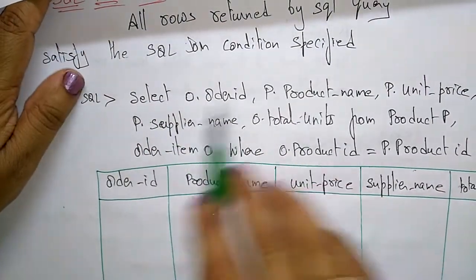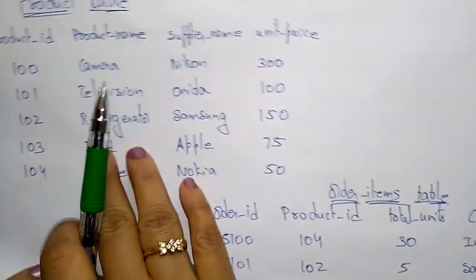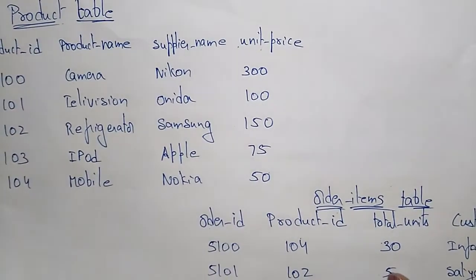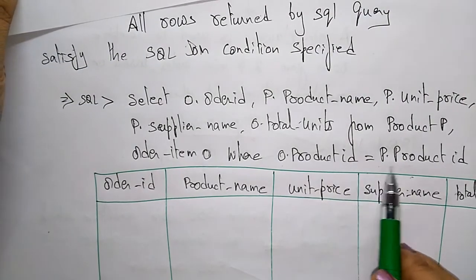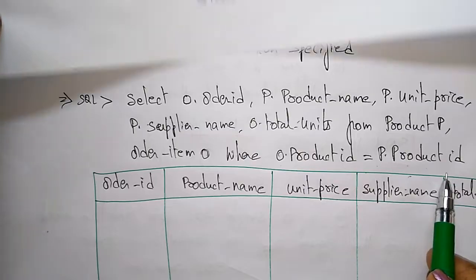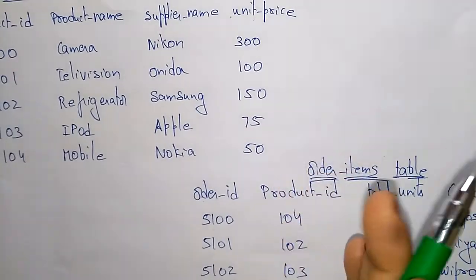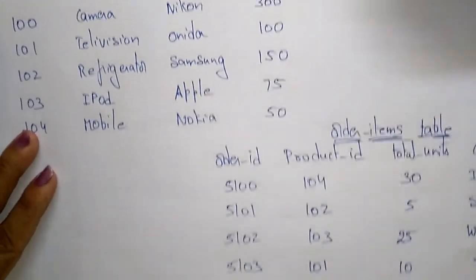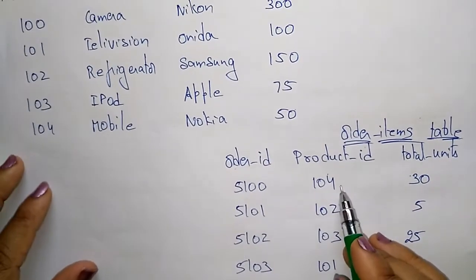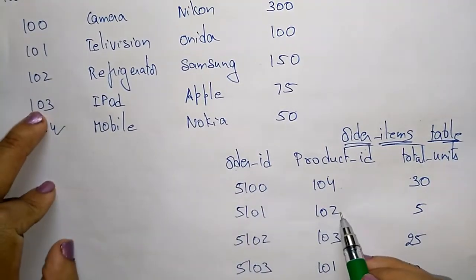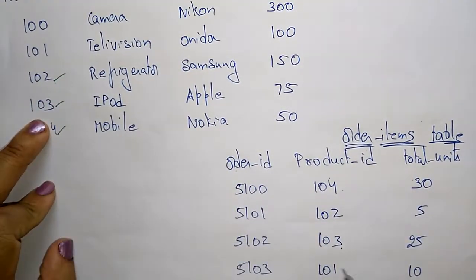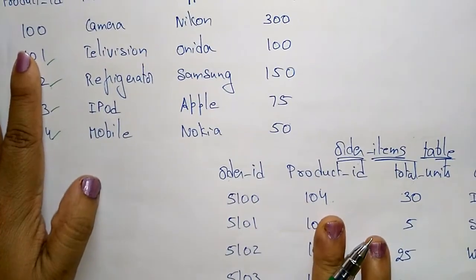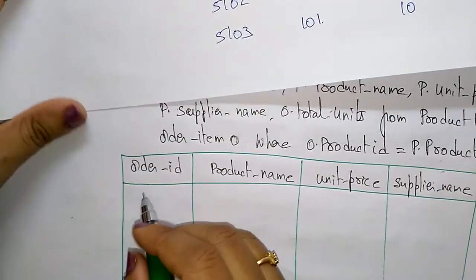I have selected fields from two tables, combining fields from the product table and order item table. The condition that must be satisfied is WHERE o.product_id = p.product_id — meaning I have to select only those items where the product ID is equal in both tables. For example, except for product ID 100, these two product IDs are equal, so those rows will be selected.